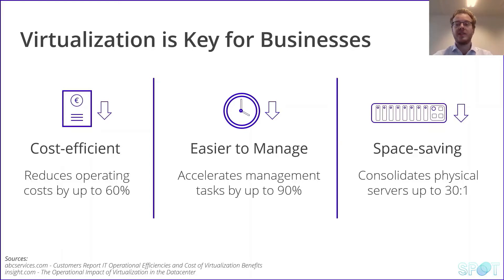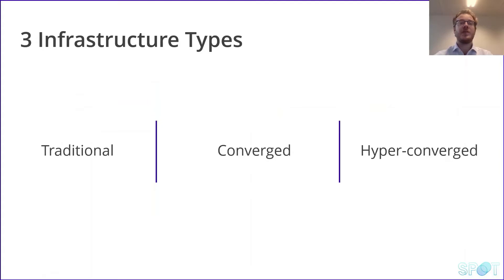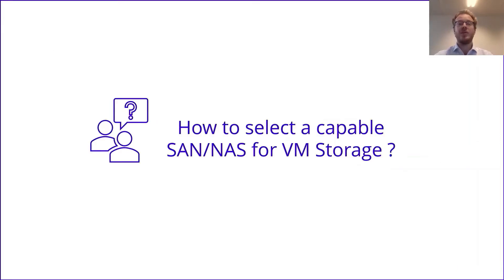Freeing up room in your data center or server room. When we look at virtualization, we can distinguish three infrastructure types: the traditional infrastructure with a server part, network switch or fiber channel, and the storage server; converged, where you have your server, network and storage switch all in one; and hyperconverged, where your networking, storage and server are all in one.